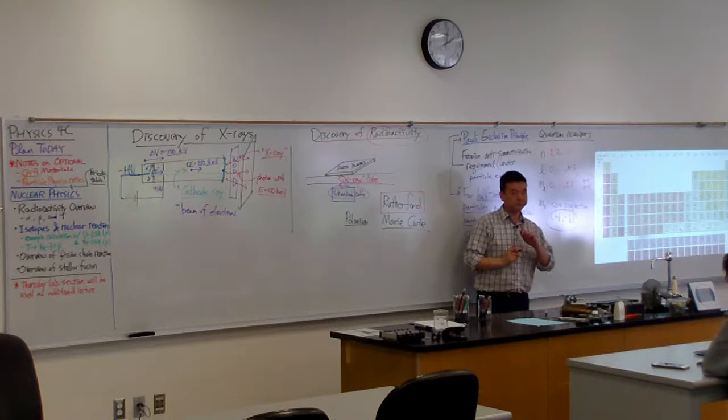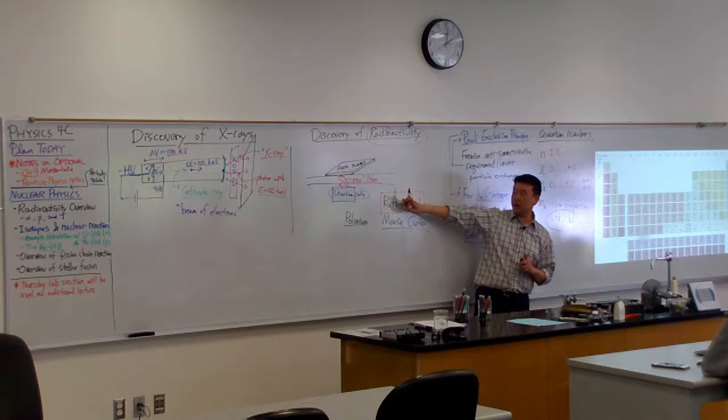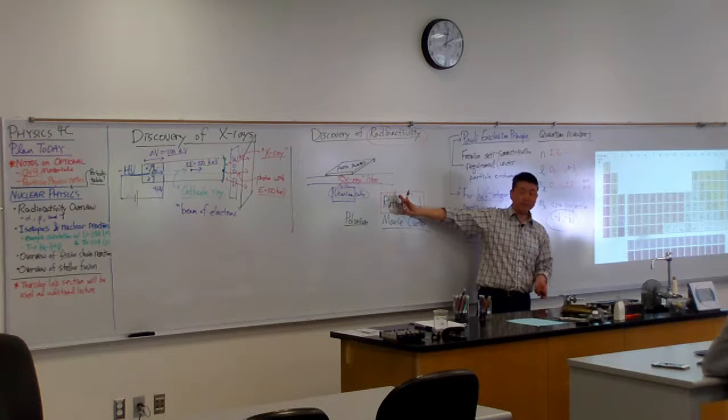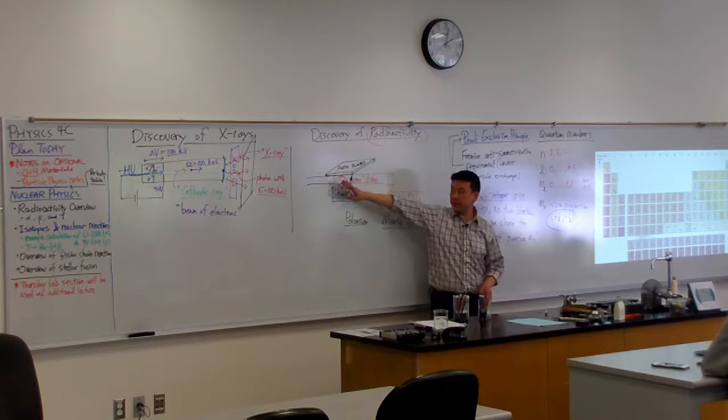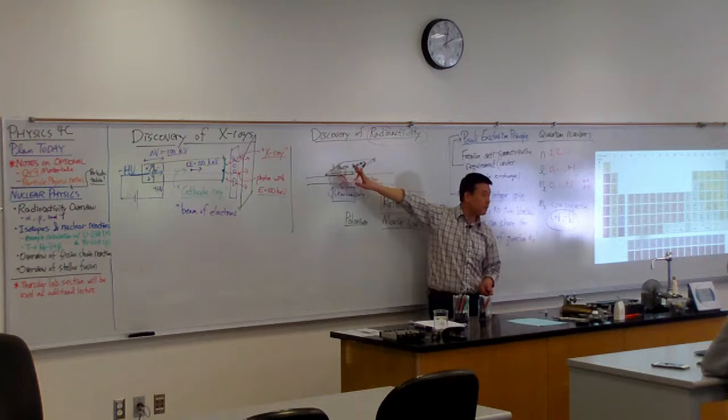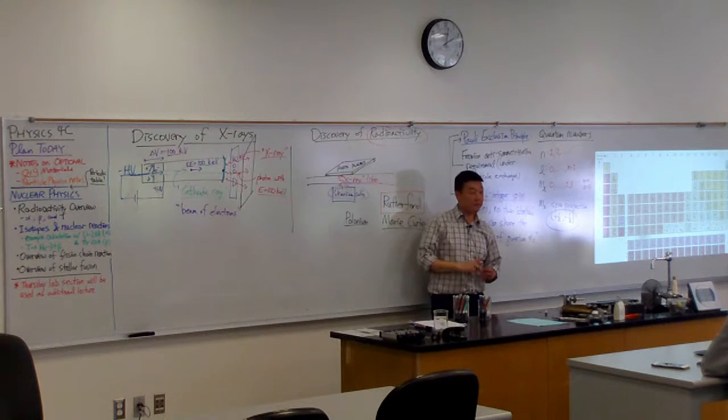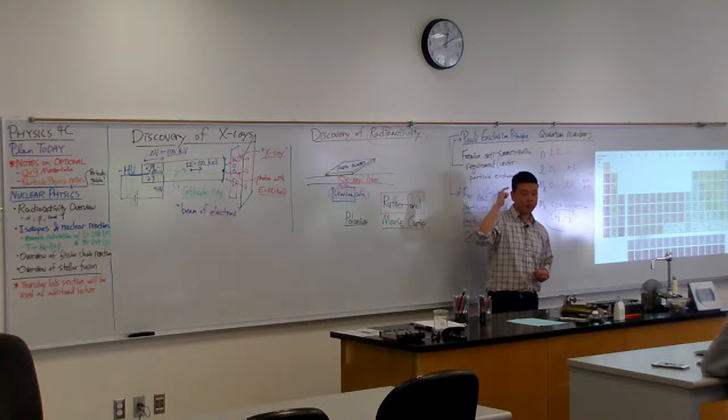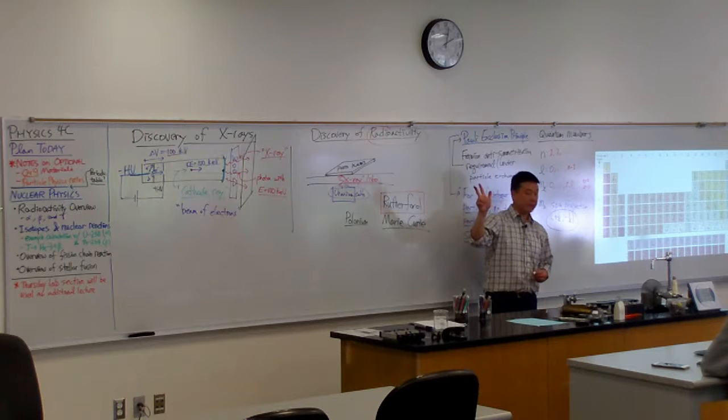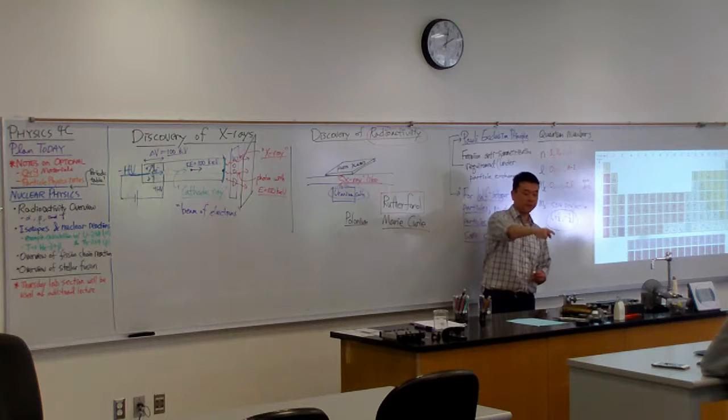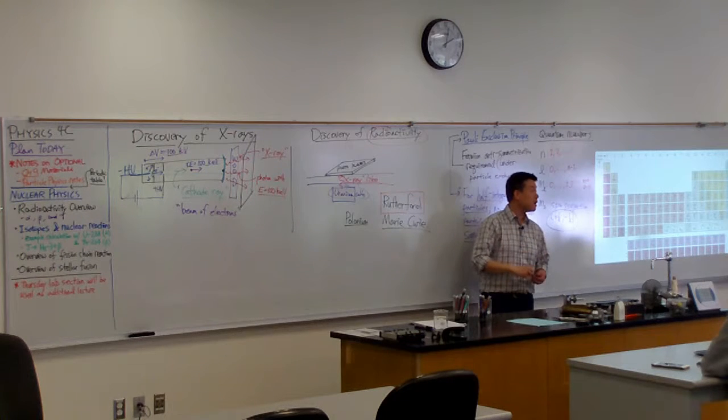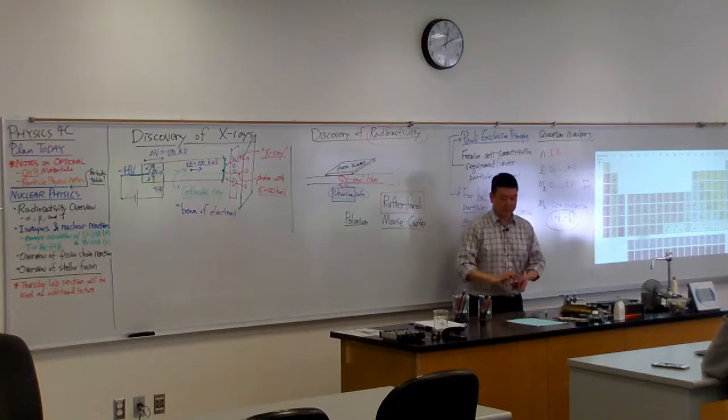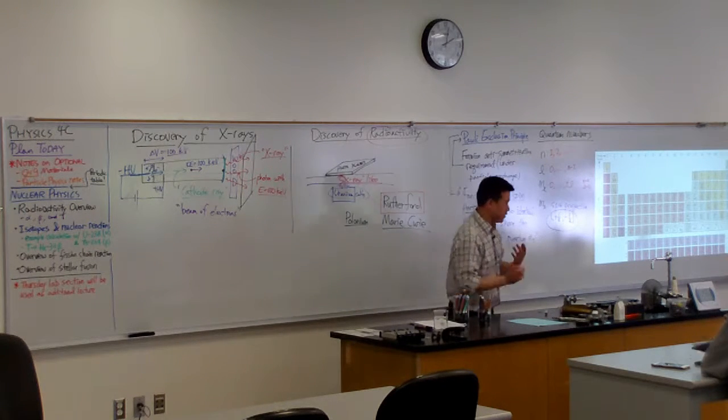It turns out these rays from radioactivity are more complex than X-ray. It has multiple components. We now call them alpha rays, beta rays, and gamma rays. Let's take a short break, and when we come back from the break, I will go over briefly alpha rays, beta rays, and gamma rays. That will also serve as a kind of radiation safety.